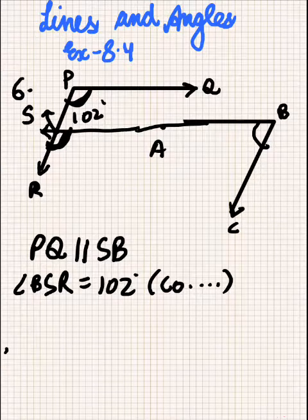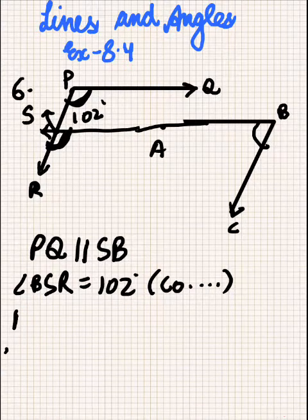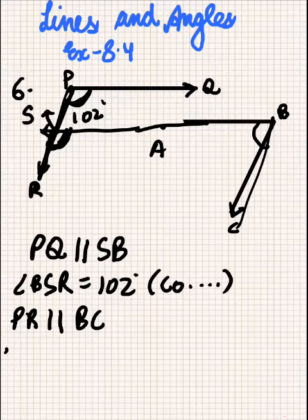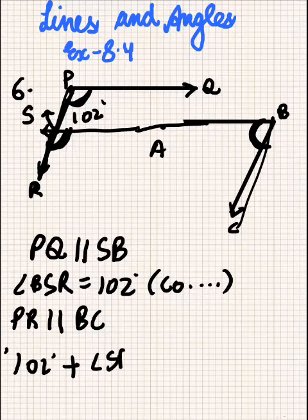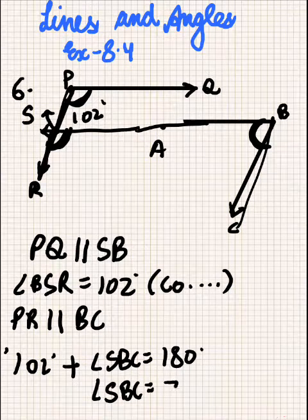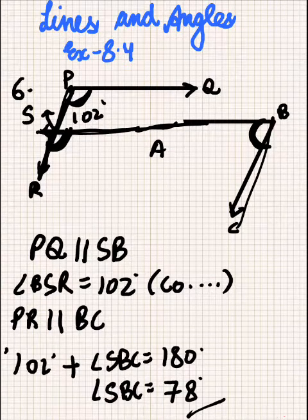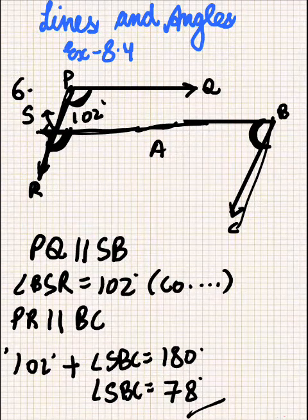Now we see that PR is parallel to BC. So these two angles will be co-interior angles. Therefore, 102 degrees plus angle ABC — or angle SBC — will be equal to 180 degrees. So angle SBC comes out to 78 degrees. It was simple: we joined the lines, used corresponding angles, and then found angle ABC using the co-interior angles axiom.